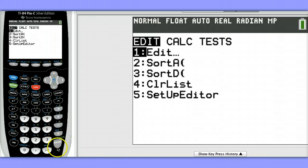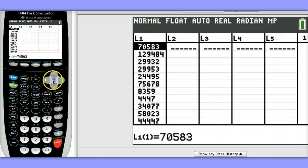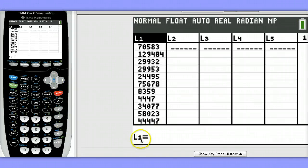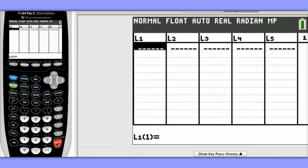Hit Stat, Enter on Edit. Now I need to clear out what's in List 1, so I'm going to go to the very top and hit Clear. Notice it cleared out the bottom, and then hit Enter to fully clear it out.